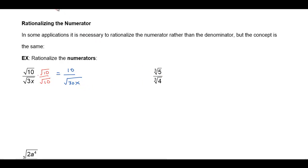So I can do the same thing with cube roots. If I have the cube root of 5 over the cube root of 4, I would want to think of multiplying by something convenient that would get rid of the cube root in the numerator.